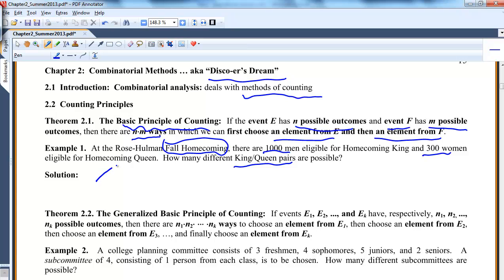If you want to think of it this way, we could actually make a tree. Here's man 1, man 2, man 3, all the way down to man 1,000. Then if man 1 is chosen, there's woman 1, woman 2, all the way down to woman 300. Imagine for each of these male branches, there's 300 female branches. So there's 1,000 choices for the male times 300 choices for the female.